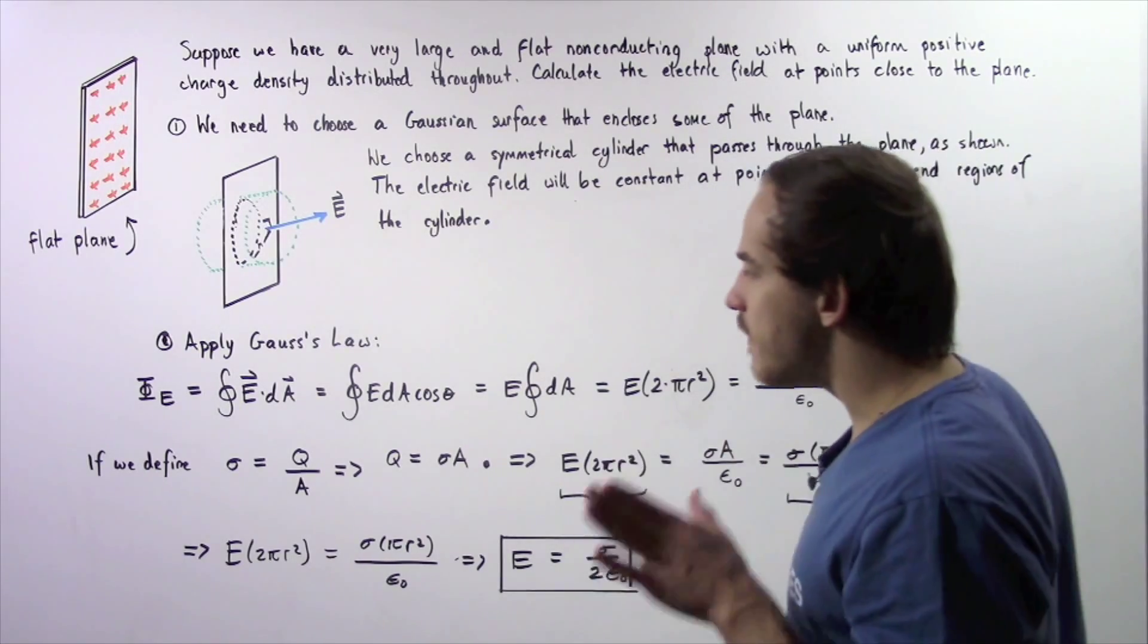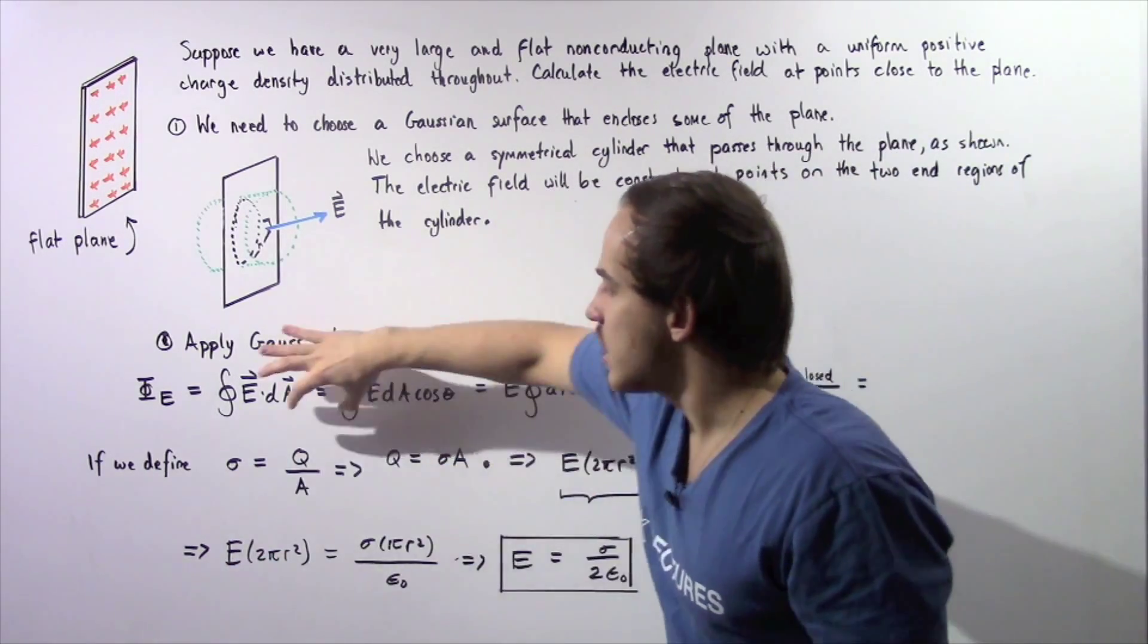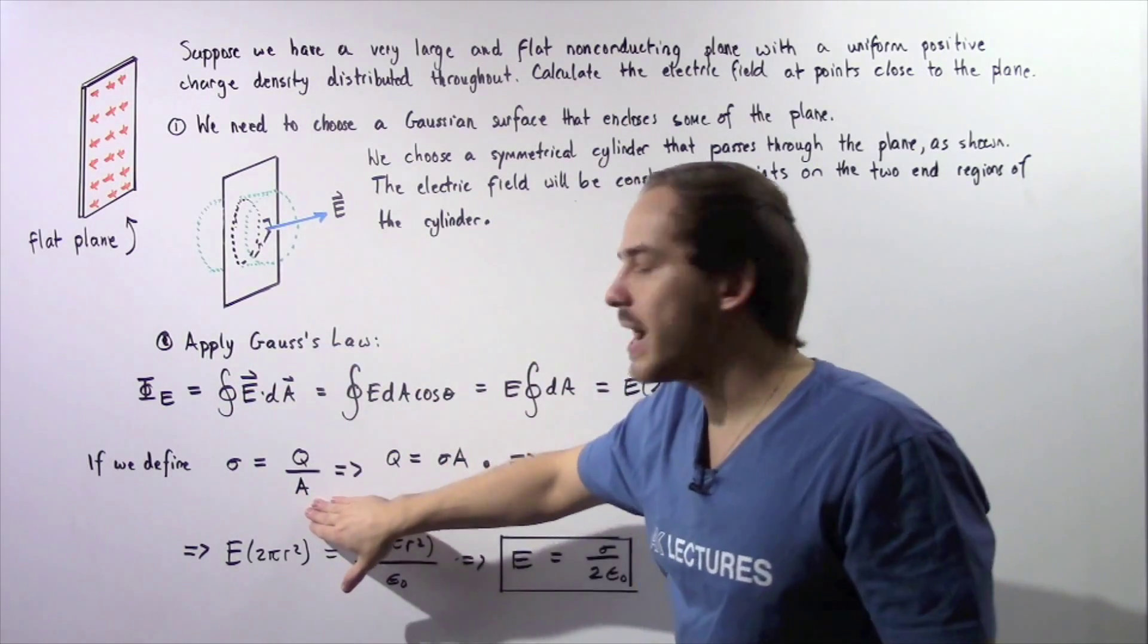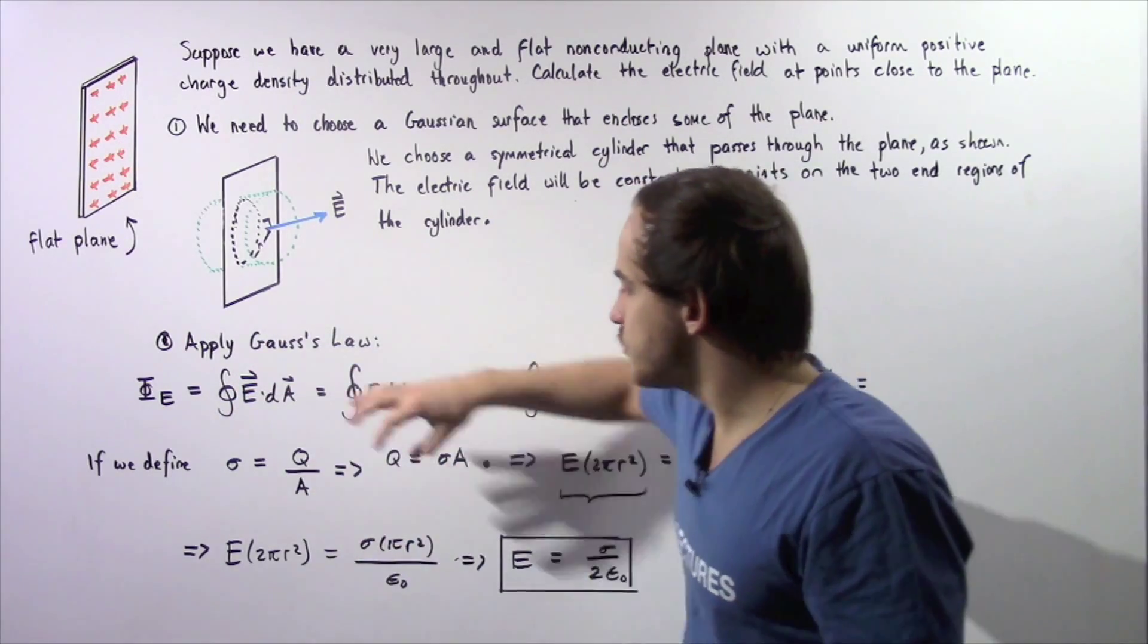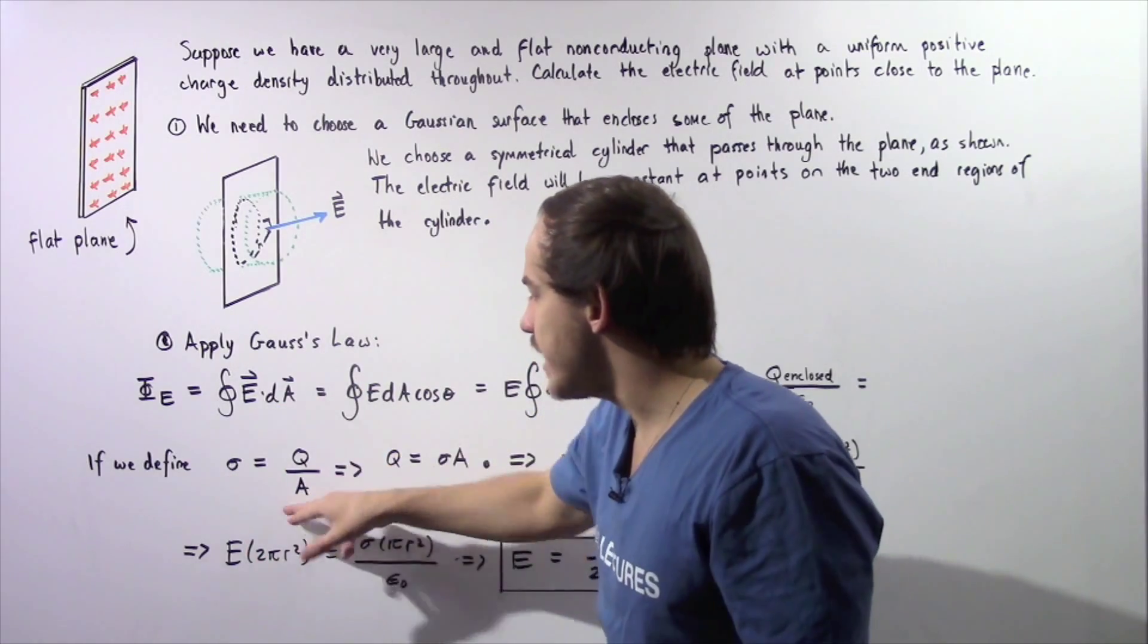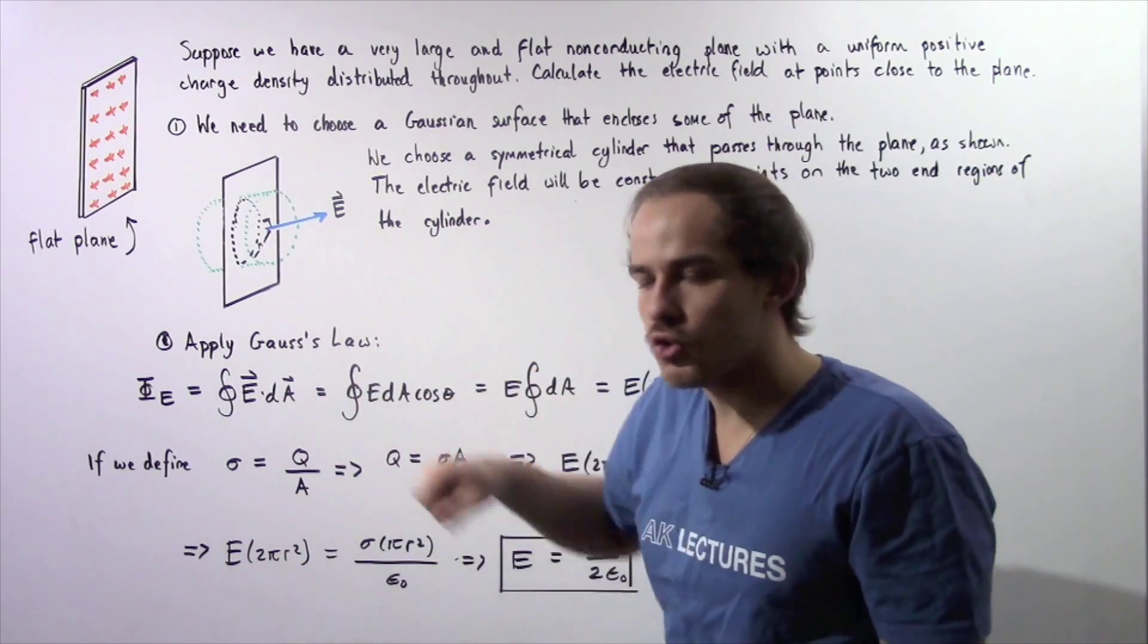Let's define the charge density as the charge divided by the area. That means we can take this equation, rearrange it, and solve for our Q. We see that Q is equal to the charge density multiplied by the area.